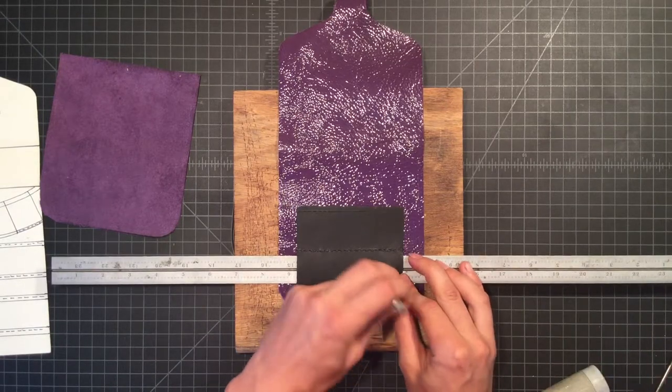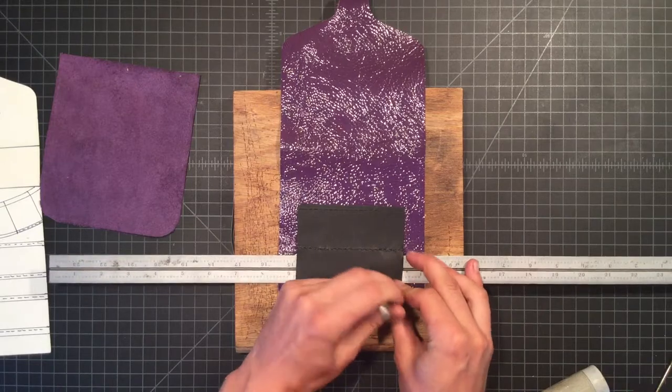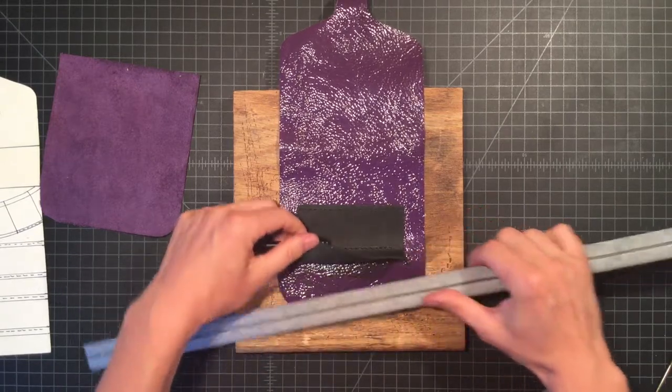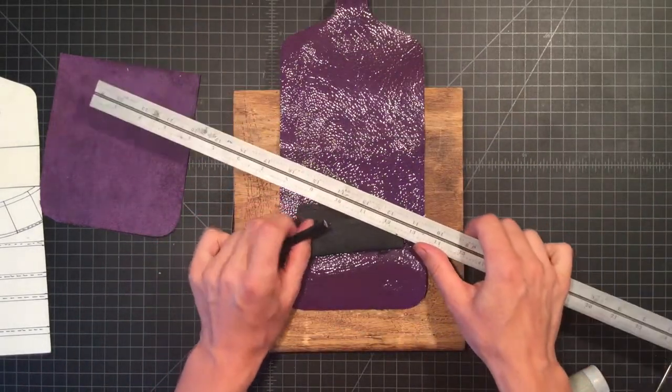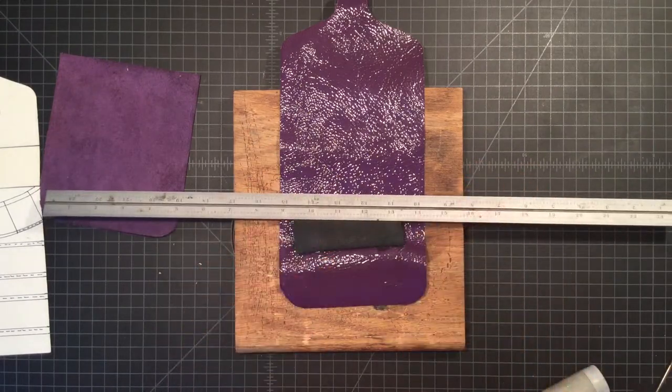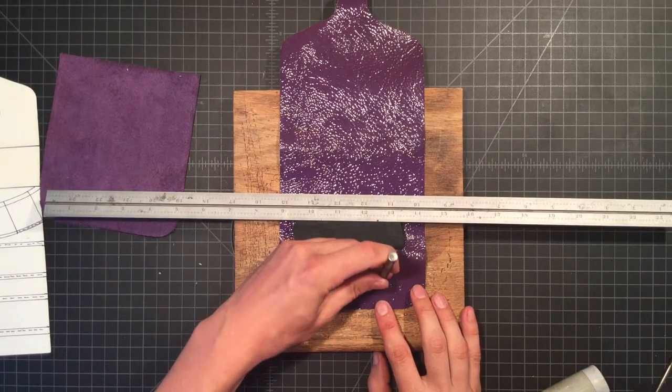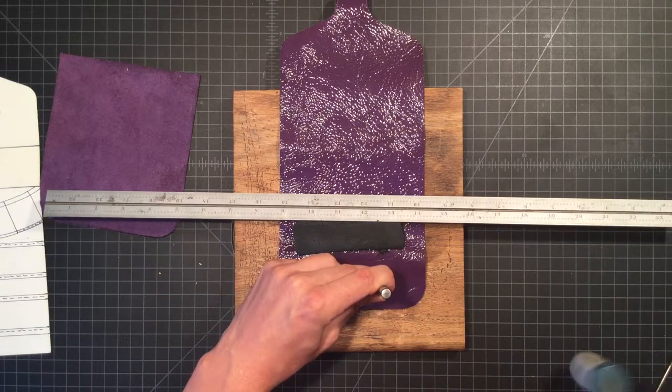And then from there, you can use a grease pen or a ruler to just follow that path. And so what I'll do is I'll just use my same registration mark.